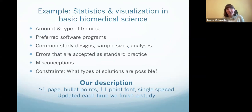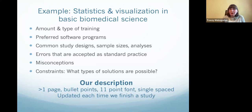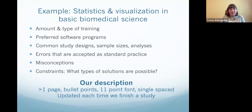Our description of our audience is far more than a page, single-spaced, bullet points in 11-point font, and we update it each time we finish a study. We have details about the amount and type of training our audience likely has, what software programs they prefer for visualization and statistics, common study designs, sample sizes, and analyses they perform, errors accepted as standard practice, misconceptions about data visualization or statistics that are common, and information about constraints — what types of solutions are or aren't possible. This is much more than simply knowing 'I want to reach basic scientists in toxicology.'